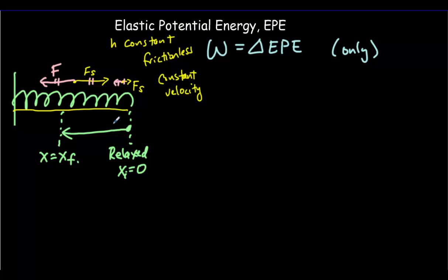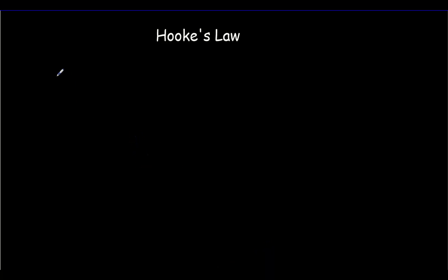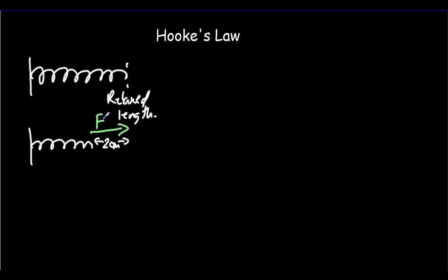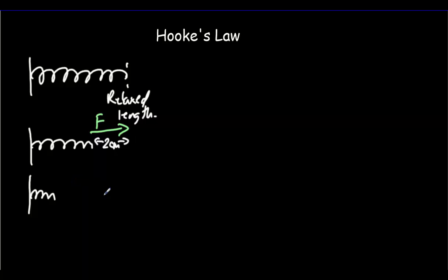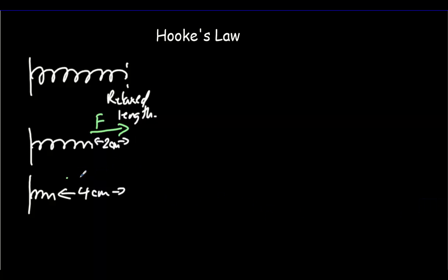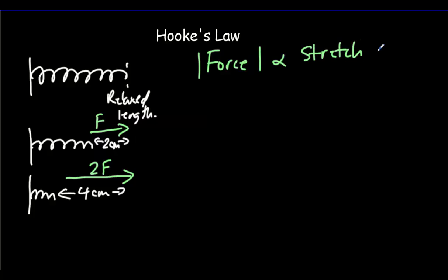Hooke's Law basically says: suppose we've got a spring at its relaxed length — no elastic potential energy stored. If we compress it, say 2 centimeters, there's a restoring force F. If we double that compression to 4 centimeters, Hooke's Law says the force from the spring will also double. In other words, the magnitude of the force from a spring is proportional to the stretch or compression.